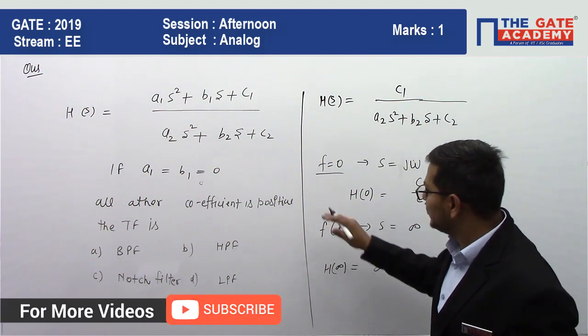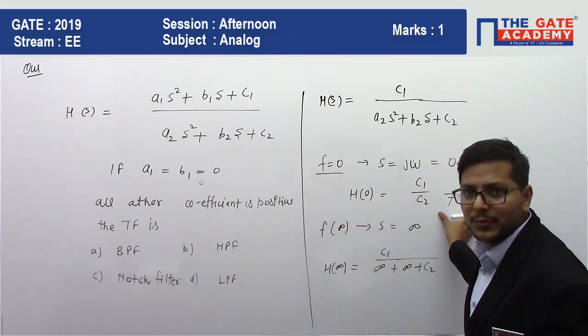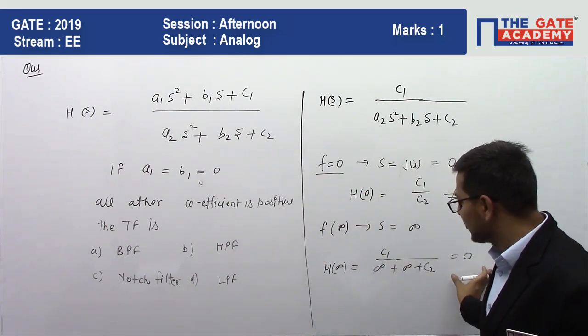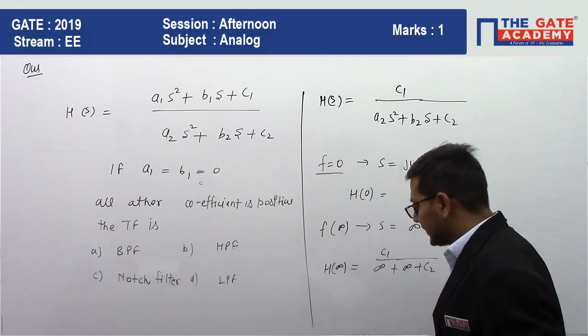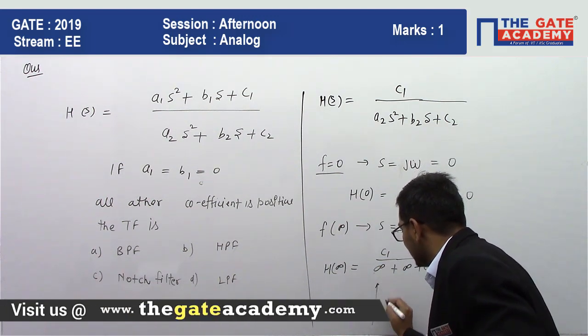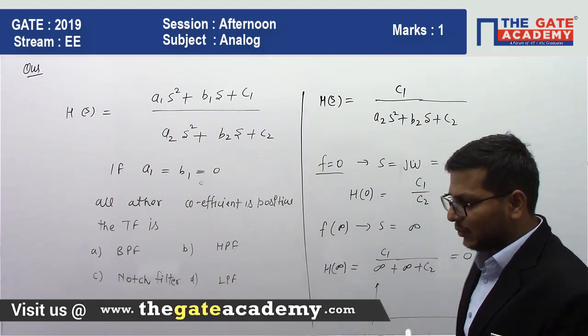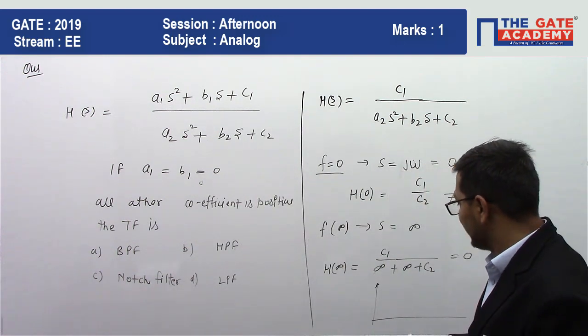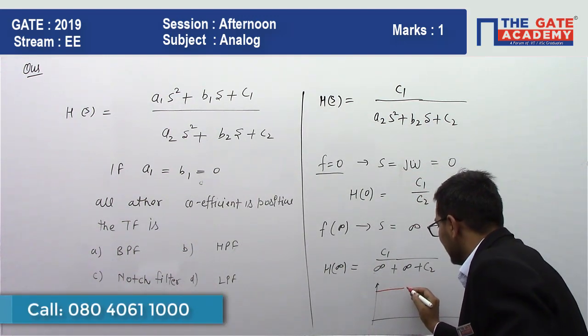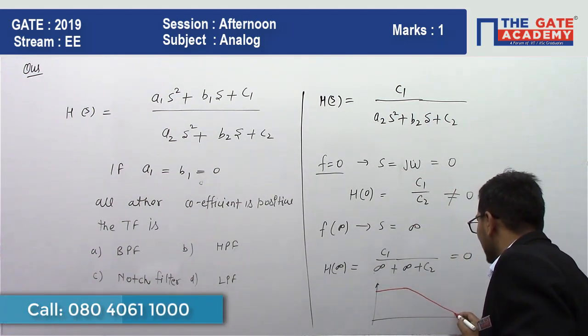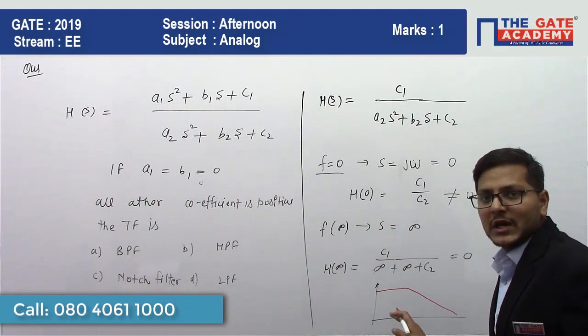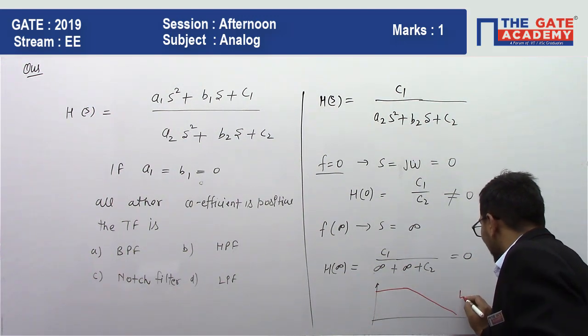So guys, we have seen that at zero frequency we have output, and at infinite frequency output is zero. It means the type of filter—now we can see that at zero frequency, our output is non-zero. At low frequency, output is non-zero, and at high frequency our output is zero. Which type of filter is this? This is a low pass filter.